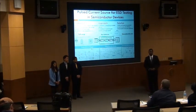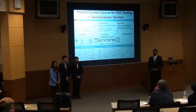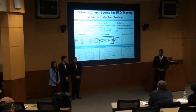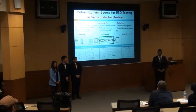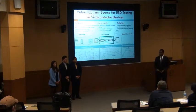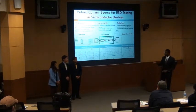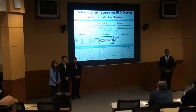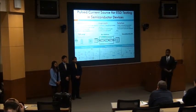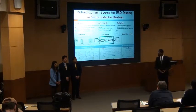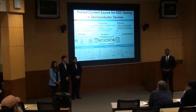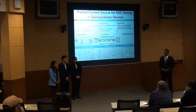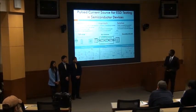Texas Instruments currently uses transmission line pulsing, or TLP, to test for electrical static discharge on cables and electrical devices. This method is a great tool to simulate a test for ESD, but it does have its limitations. In this project, we are tasked with either designing a brand new method of testing for ESD or modifying the current TLP setup with external circuitry to produce the current pulse used to simulate ESD. Our approach involves one method, or a hybrid of the two methods.